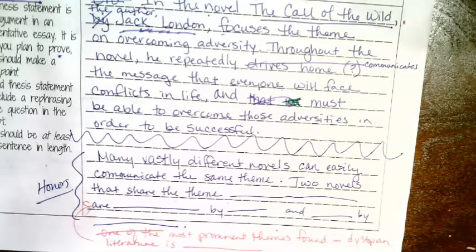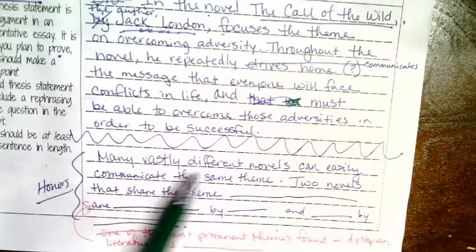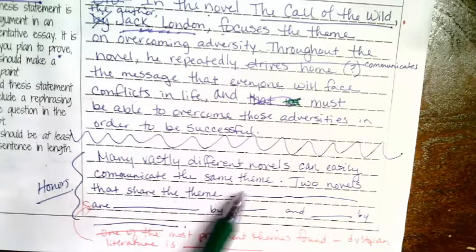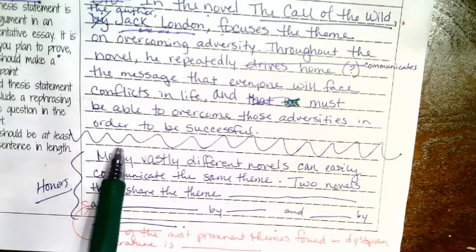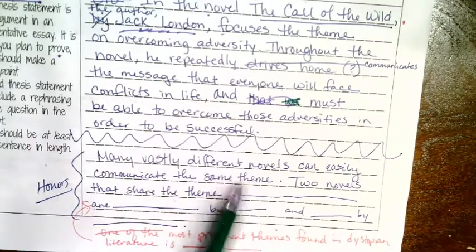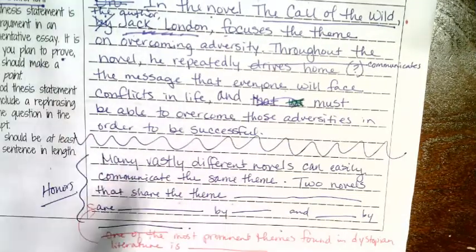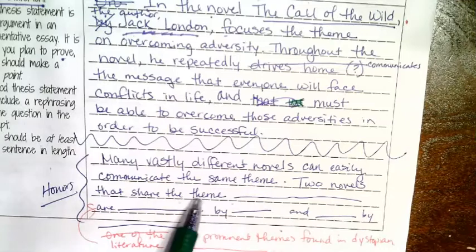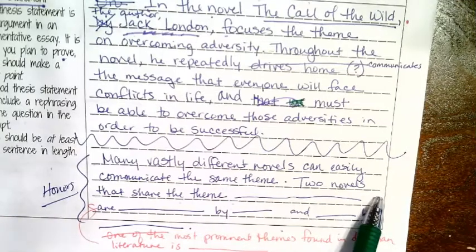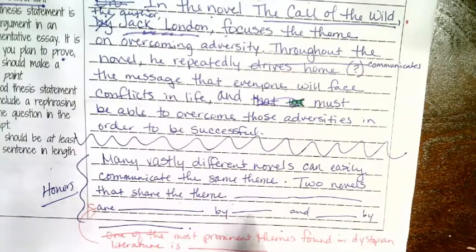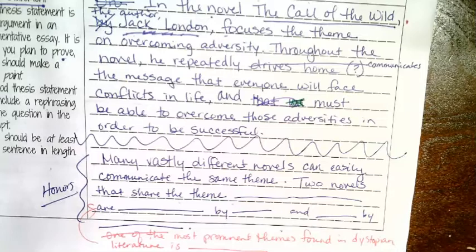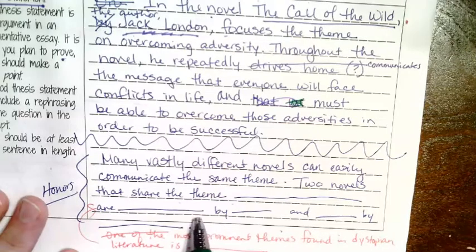Then I'll show you a specific one that I did as an example. 'Many vastly different novels can easily communicate the same theme.' So I'm identifying that different novels can work on the same theme. 'Two novels that share the theme of [blank] are [blank] by [blank] and [blank] by [blank].' That is something you can do — very generic.